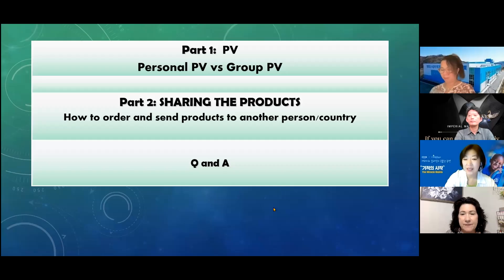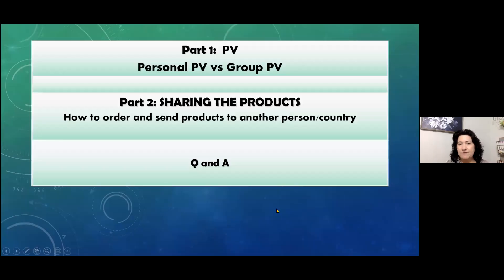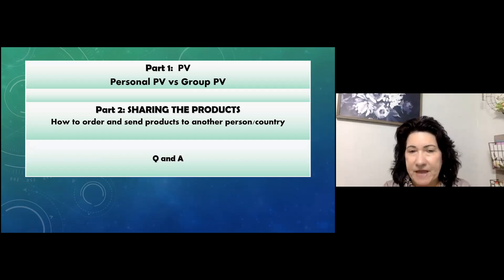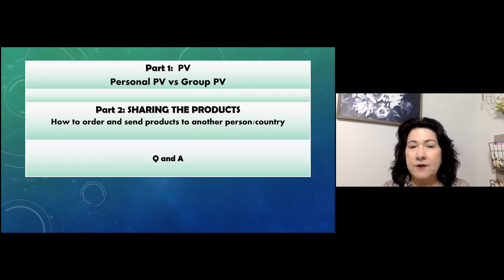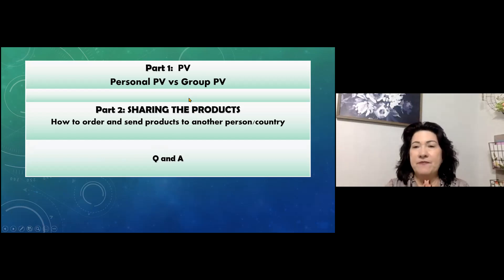We're splitting our presentation into two parts. I'll cover part one, which is the difference between personal PV and group PV and the binary system. Then Jess will cover how to order and send products to another person or another country. And if we have time at the end, we'll take some questions and answers.